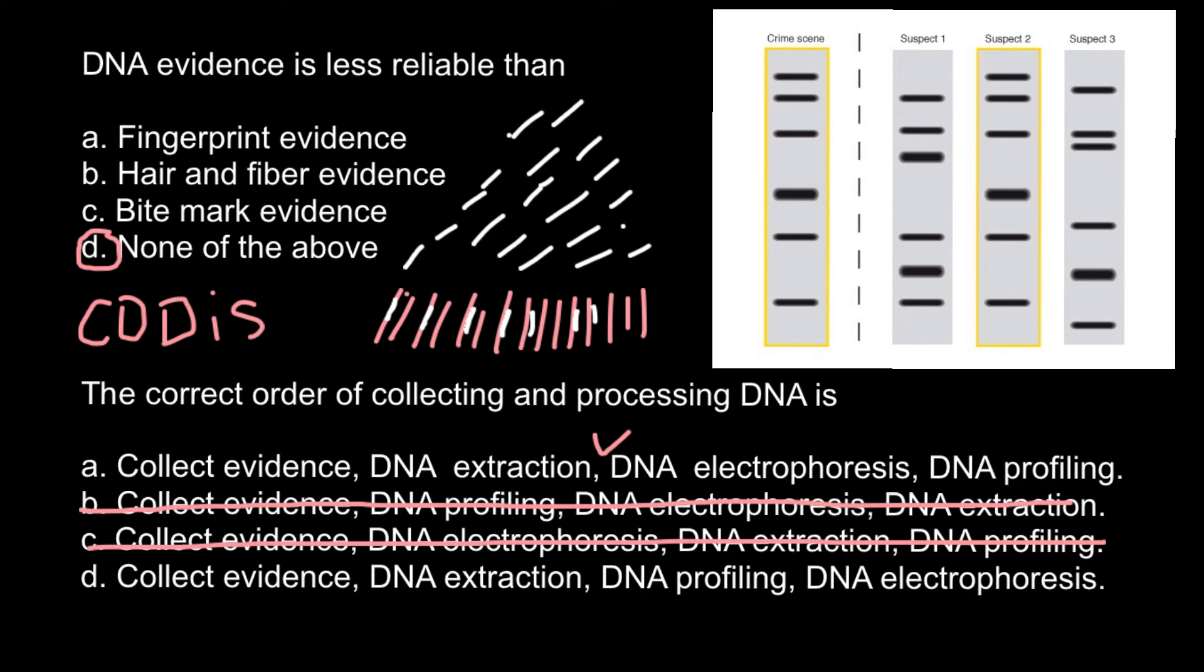Such a DNA profile would be compared with DNA profiles of the suspects, like you see on this picture. Suspect number one, number two, and number three. As you see, this profile matches the profile of suspect number two.